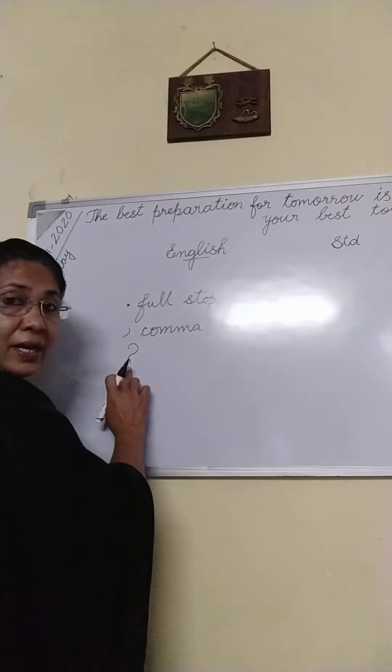Now, apostrophe. Like a small comma — that is known as apostrophe. It is used to show belonging. For example, 'This is my mother's sari,' 'This is my mother's pen,' 'This is my father's car.' You use apostrophe to show possession.